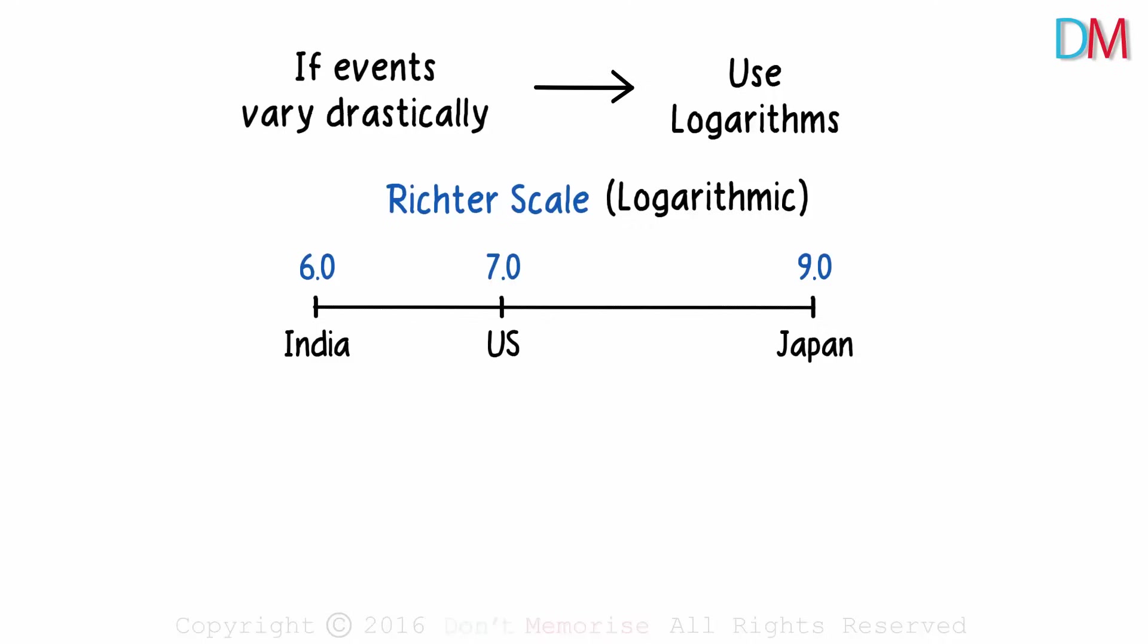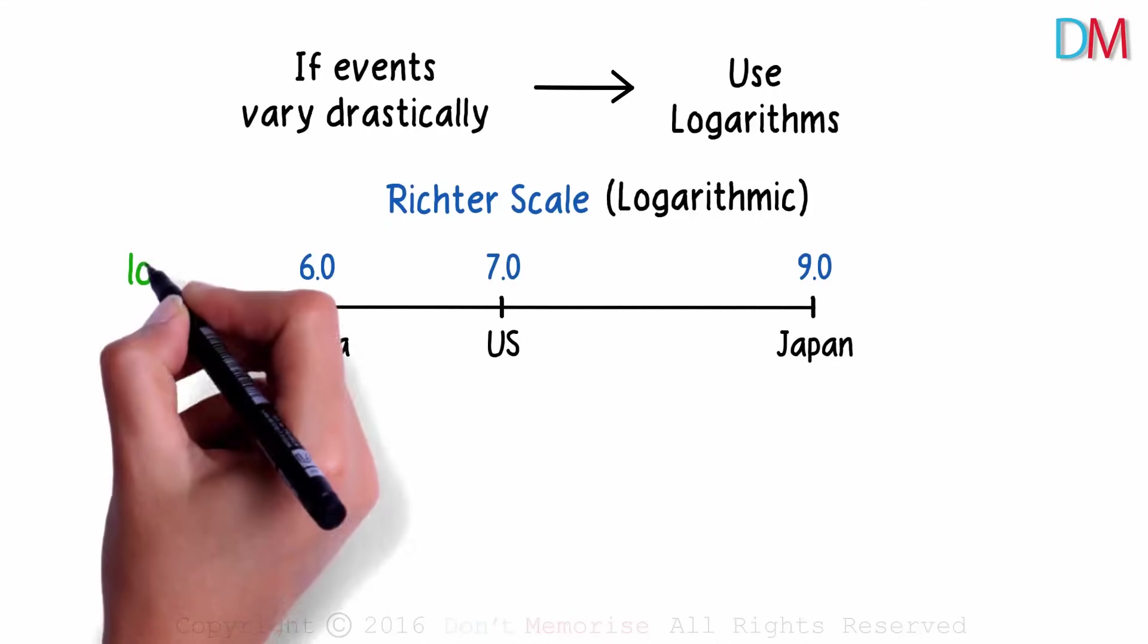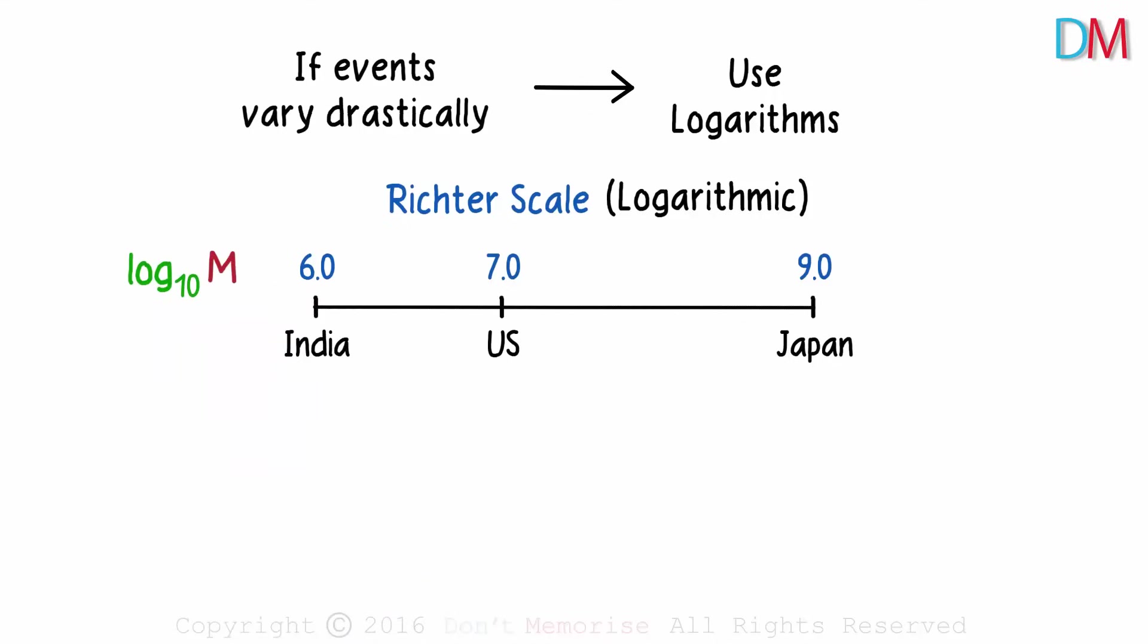Now what does this really tell us? The Richter scale is a base 10 logarithmic scale. Which means they are in the form log M to the base 10. Don't worry about what this M is. We don't really want to get into details.